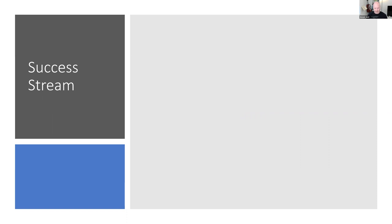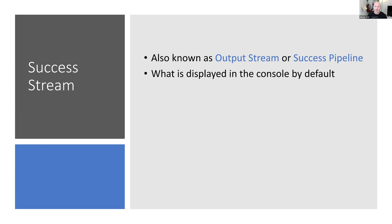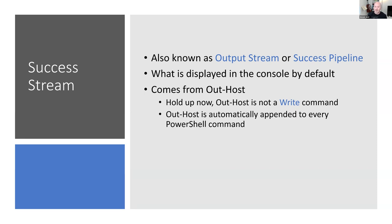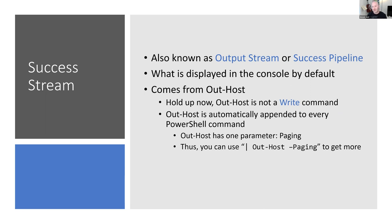Let's talk about the success stream — stream number one, also known as the output stream or success pipeline. These terms are pretty much interchangeable. This is what is displayed in the console by default. When you do something in PowerShell and get content back, that's the output stream. It comes from Out-Host. Out-Host is automatically appended to every PowerShell command. Out-Host has one parameter: paging.